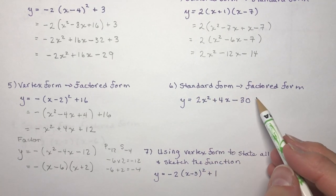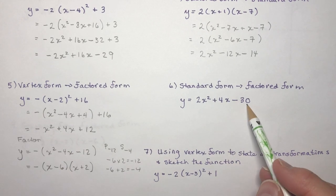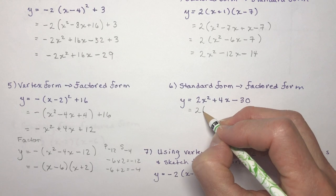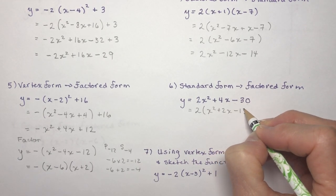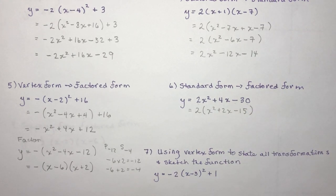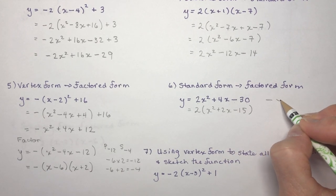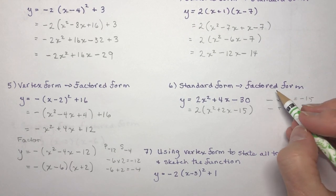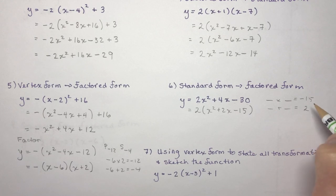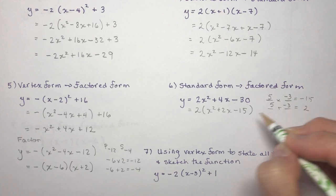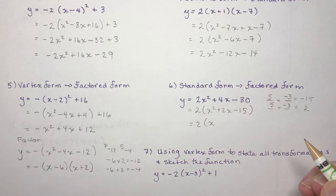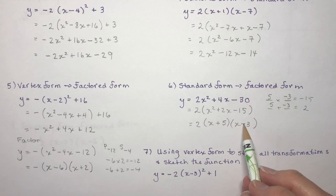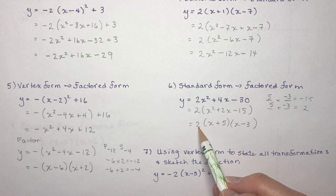Question six: standard form to factored form. This is a complex trinomial with a coefficient of 2. Factor out the 2 first, leaving x² + 2x − 15 — now it's a simple trinomial. Find a product of −15 and sum of +2: that's +5 and −3. The factored form is 2(x + 5)(x − 3). From factored form you can immediately find the zeros and see the vertical stretch is 2.